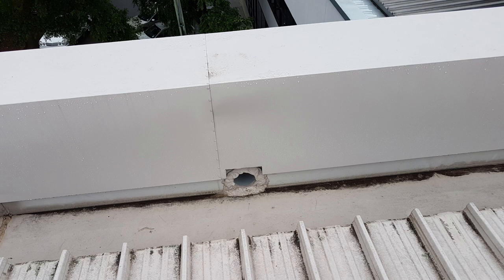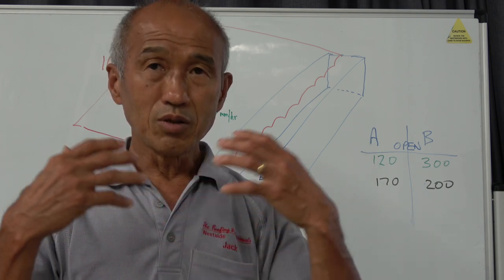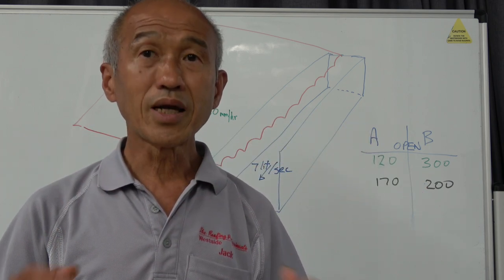So overflows in box gutters are absolutely essential, because without them if you get any blockage of a downpipe you'll get water into the house and a lot of water.